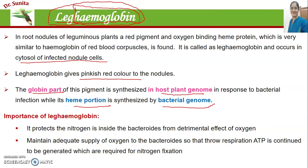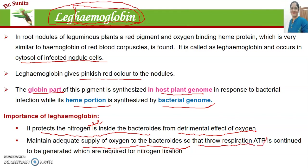The importance of leghemoglobin: it is very important during nitrogen fixation in leguminous plants. It protects the nitrogenase enzyme present inside the bacteroids from the detrimental effects of oxygen. It also maintains an adequate supply of oxygen to the bacteroids, which requires ATP in large amounts for nitrogen fixation. The leghemoglobin maintains adequate oxygen supply so that respiration continues and ATP is continually formed, allowing nitrogen fixation to proceed, since one molecule of nitrogen fixation requires 16 molecules of ATP.